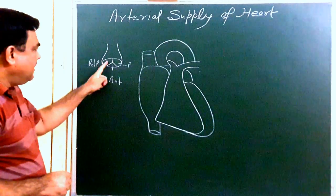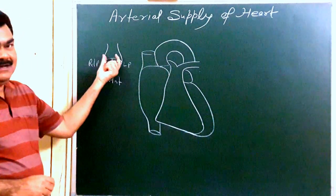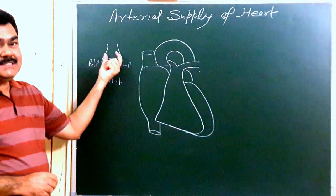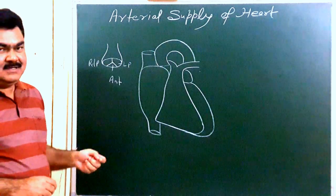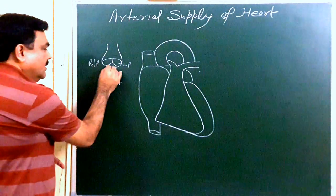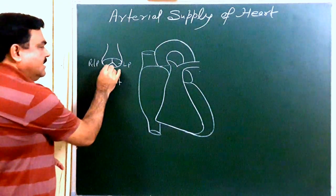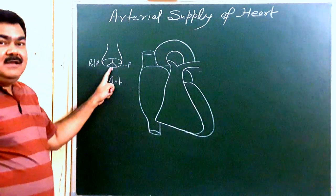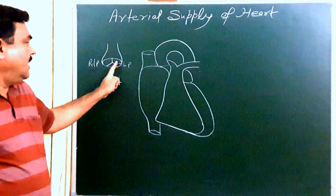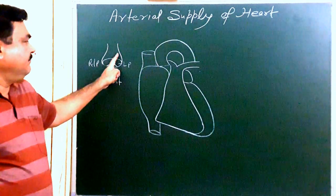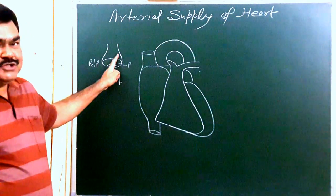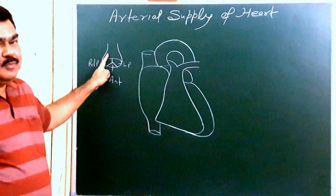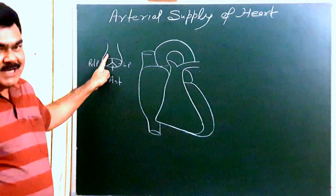Just above each cusp there is a dilatation known as a sinus. Above the anterior cusp is the anterior aortic sinus. Above the left posterior cusp is the left posterior aortic sinus. Above the right posterior cusp is the right posterior aortic sinus.